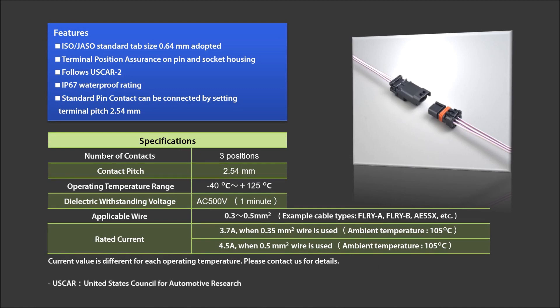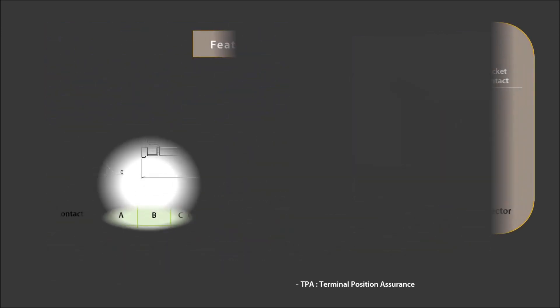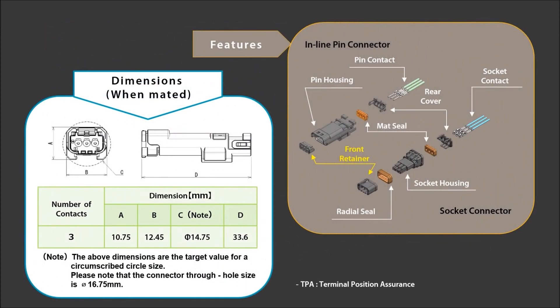Both MX-80 pin and socket housings provide a TPA mechanism that enables the detection of incomplete terminal insertion. TPAs prevent errors during assembly and provide mating confirmation with a clear audible click and tactile feedback that contribute to connector reliability and ease of use.